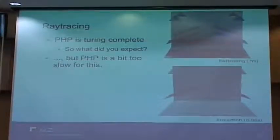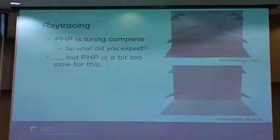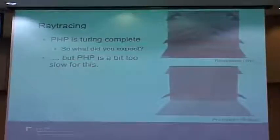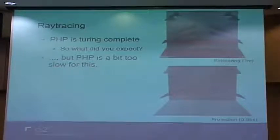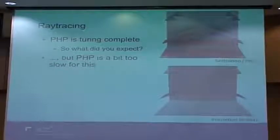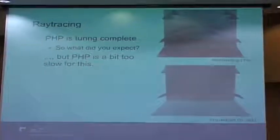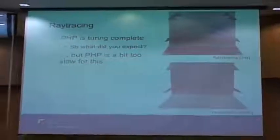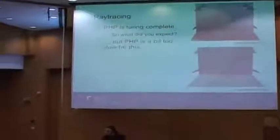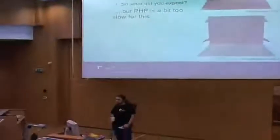PHP is a bit slow — too slow for this. This image used about 10 or 12 polygons, was 100 pixels wide and high, and I think I used four times anti-aliasing. It took about seven minutes, and my computer with two gigabytes of RAM started swapping very quickly. So PHP is not the optimal technology for ray tracing, but it works of course.